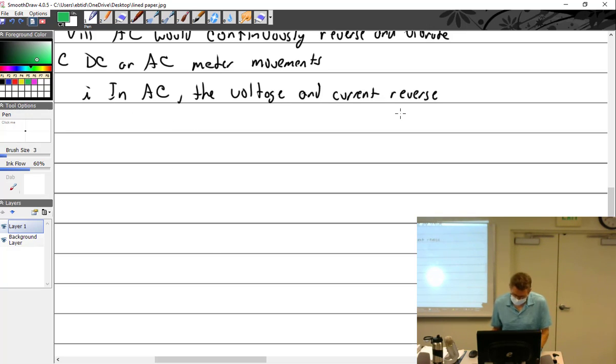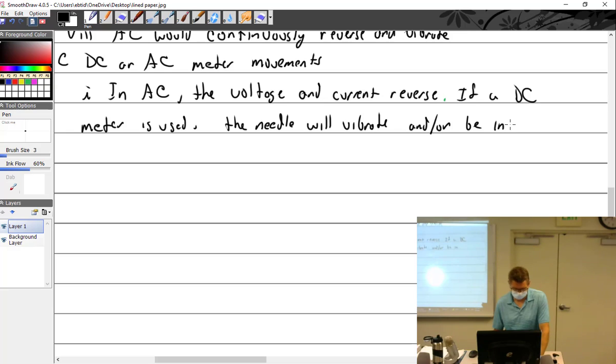If a DC meter is used, the needle will vibrate and or be inaccurate. But that's okay. Two wrongs don't make a right. Three lefts make a right.